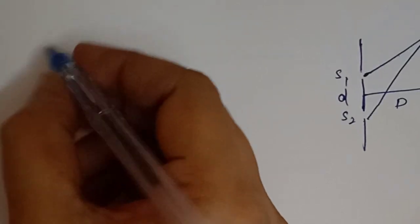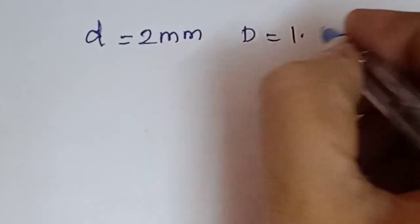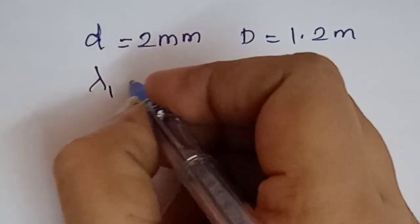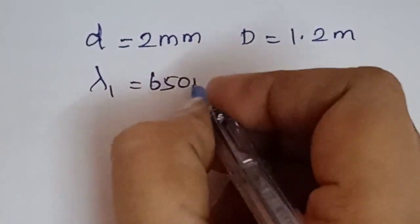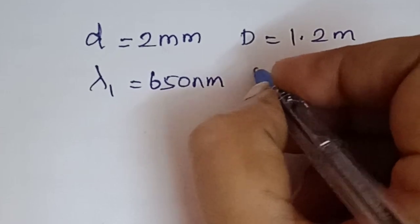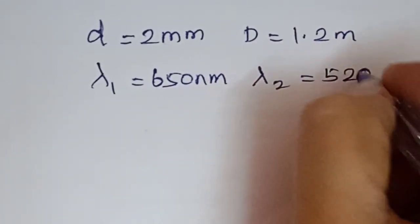In the problem, the distance between the two slits is d, which is equal to 2 millimeter. The distance between the slit and the screen is 120 centimeter. The beam has 2 wavelengths: lambda 1 is 650 nanometer and lambda 2 is 520 nanometer.